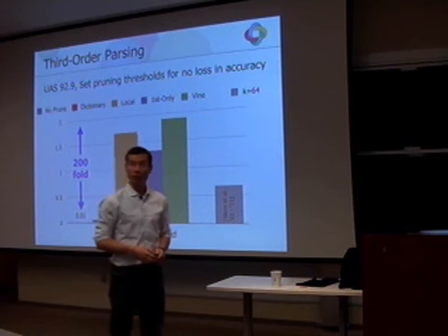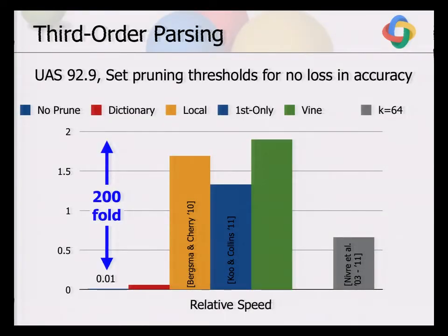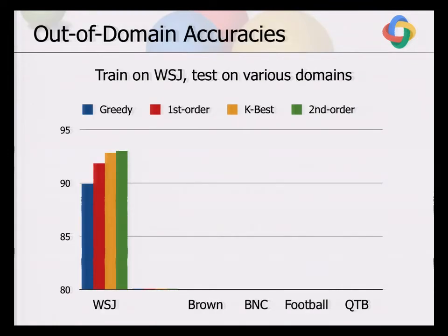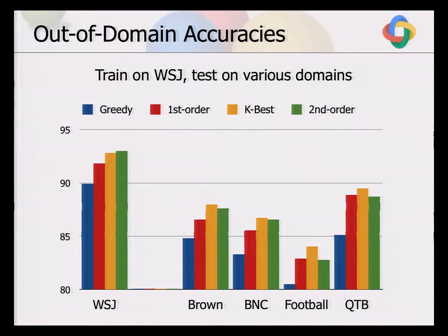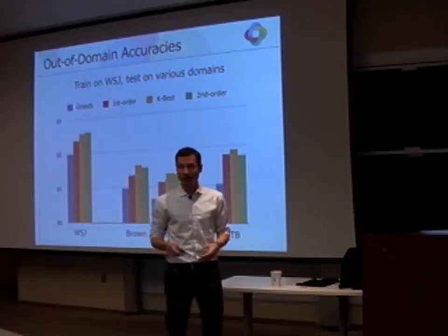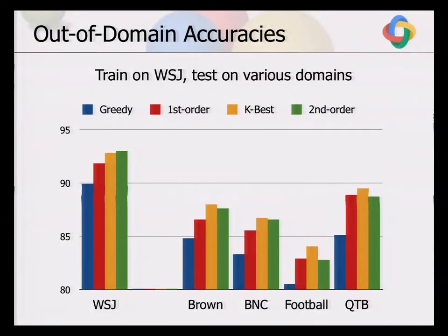These accuracies of 93% unlabeled attachment score look great, but that's on the Wall Street Journal, and we want to parse real text. If we look at out-of-domain test sets — the Brown corpus, the British National Corpus football forums data, and the question treebank — accuracies go down significantly. The parsing community always complains about overfitting to the Wall Street Journal, but very few people actually evaluate on these other datasets, partly because they're not professionally annotated by the LDC and people may not trust them. But it's important to look at real test sets.